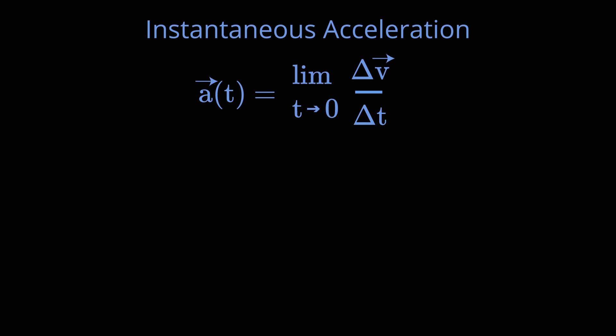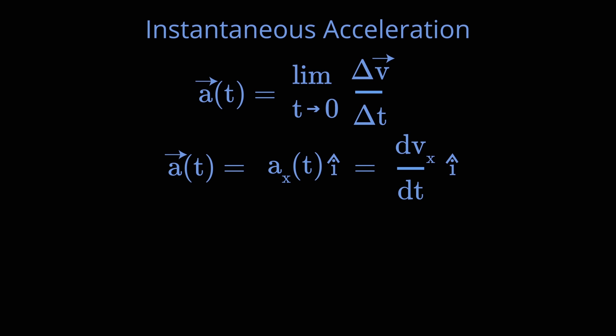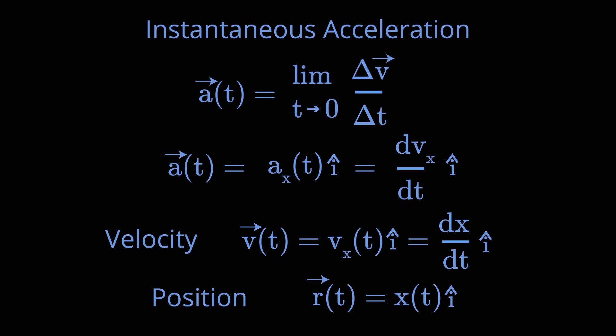If we want to use notation, we don't want to keep writing limit delta t goes to 0. So we write a of t — it has a component a of t i hat. And that component a of t is precisely the derivative of the velocity function as a function of time. So now we've described the position vector, the velocity vector, and the acceleration vector associated with motion.